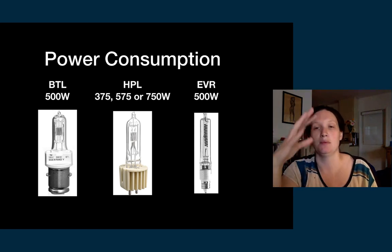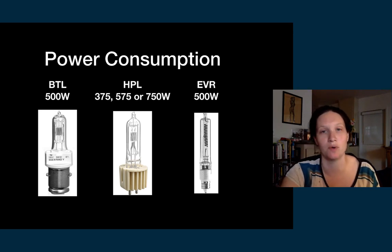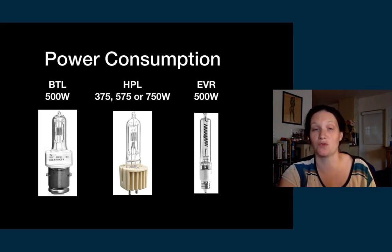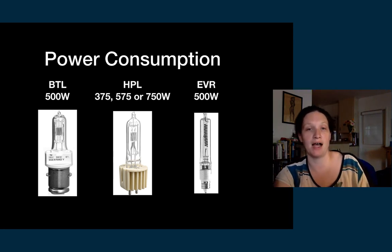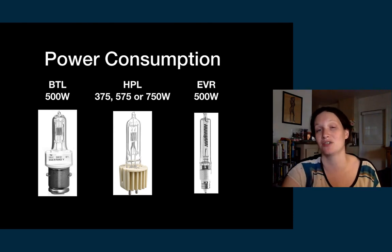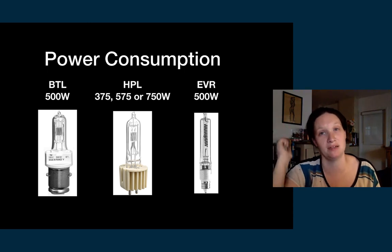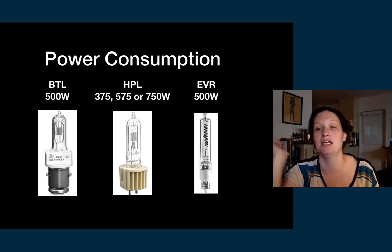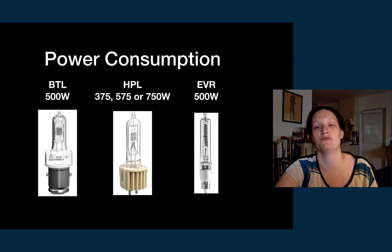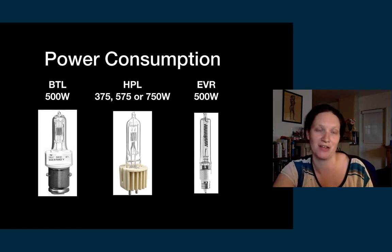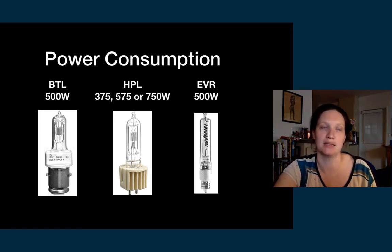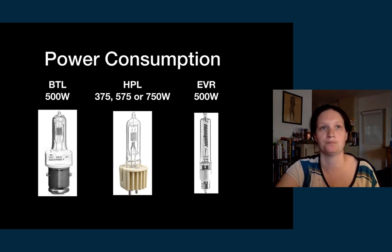Here are three lamps we might find in our theater. A BTL is 500 watts. An HPL — what we use for a Source 4 — is 575 watts standard, 375 if you want it less bright, or 750 if you want it brighter. The 750-watt lamps have a third pin to prevent inserting it upside down. EVR is an example of a theatrical lamp with a screw base. So these three lamps represent the three base types: bi-pin for the HPL, screw base for the EVR, and medium pre-focus for the BTL in a Fresnel.